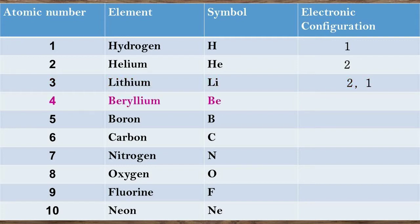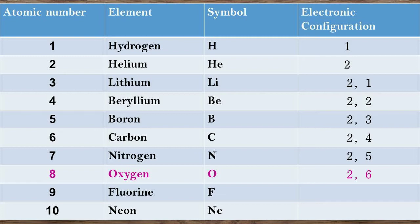Similarly, the electronic configuration of beryllium with atomic number 4 is 2, 2. The electronic configuration of boron with atomic number 5 is 2, 3. The electronic configuration of carbon with atomic number 6 is 2, 4. Nitrogen with atomic number 7 has electronic configuration 2, 5. Oxygen with atomic number 8 has electronic configuration 2, 6. Fluorine with atomic number 9 has electronic configuration 2, 7. Neon with atomic number 10 has electronic configuration 2, 8.